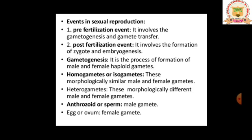Now let's look at the first pre-fertilization event: gametogenesis. The name itself tells you — it is the process of formation of male and female haploid gametes. Always remember, gametes are haploid in nature. This process of forming male and female haploid gametes is called gametogenesis.